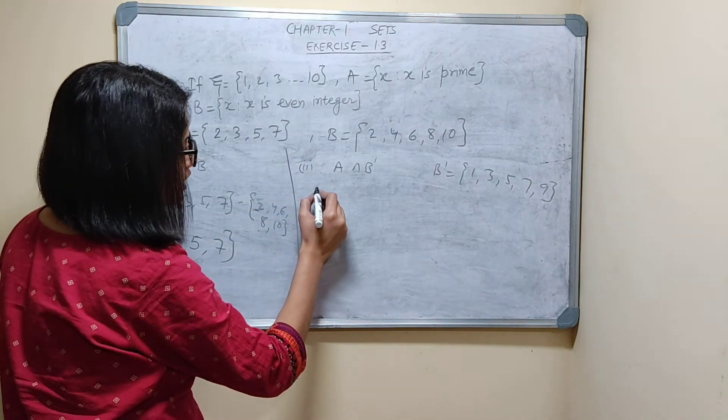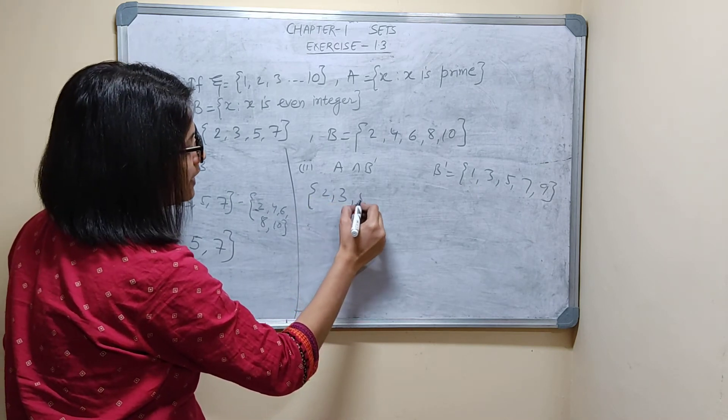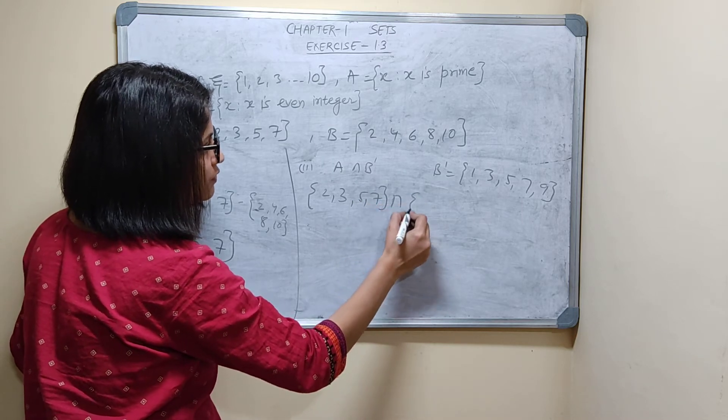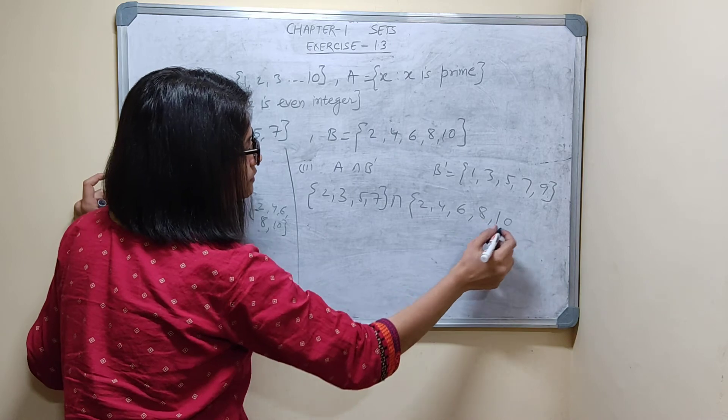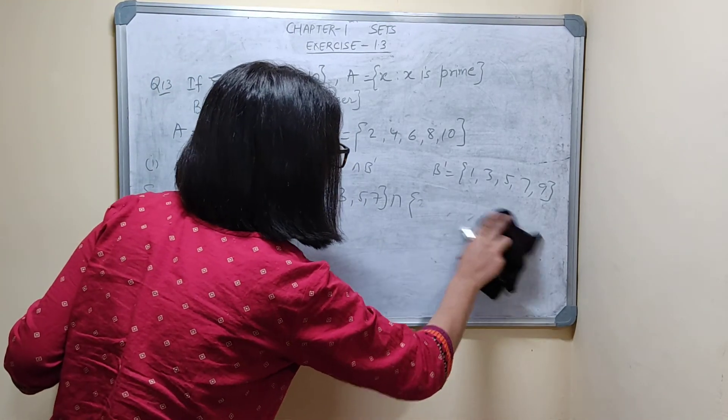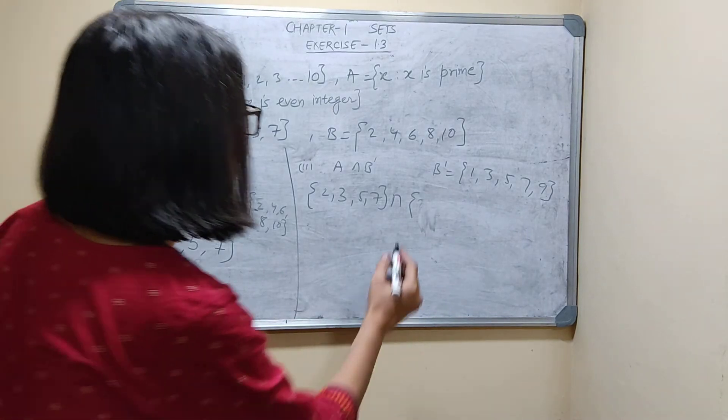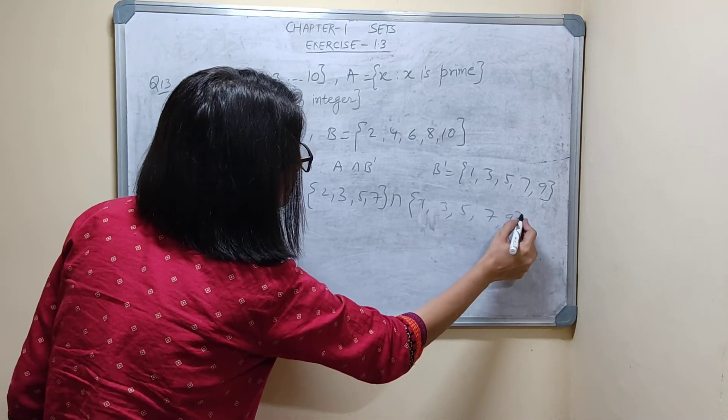A intersection B dash. So A will be what? 2, 3, 5, 7. Intersection B dash is what? 2, 4, 6, 8. So that is... we want B dash. So 1, 3, 5, 7, 9.